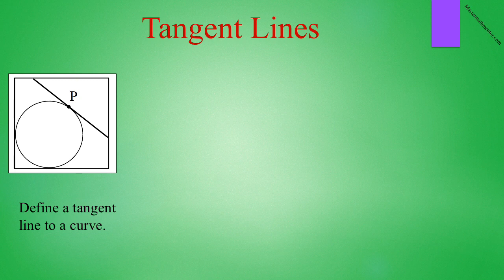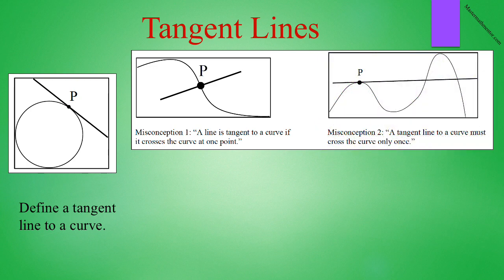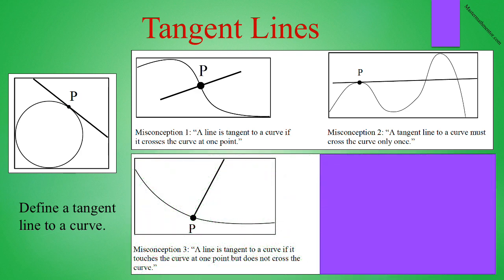So, turn off the video and in the space provided on page 3, see if you could come up with a definition of a line tangent to a curve. You may have said that a line is tangent to a curve if it crosses the curve at one point. That's not correct. In the diagram shown, the line crosses the curve at point P, but it is clearly not a tangent line. You may have written that a tangent line to a curve must cross the curve only once. This too is wrong. The line shown in the figure is tangent to the curve at point P, but it also crosses it at two other points. You may have written that a line is tangent to a curve if it touches the curve at one point but does not cross the curve. This is also wrong. The line touches the curve at point P, but it is clearly not a tangent line.